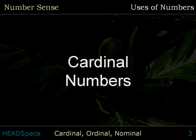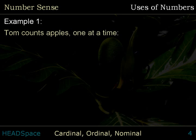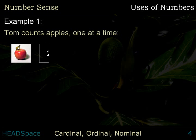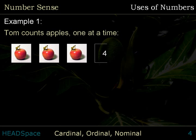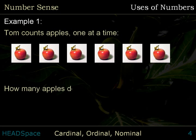Cardinal Numbers. Example 1: Tom counts apples one at a time. 1, 2, 3, 4, 5, 6. How many apples does Tom have now?